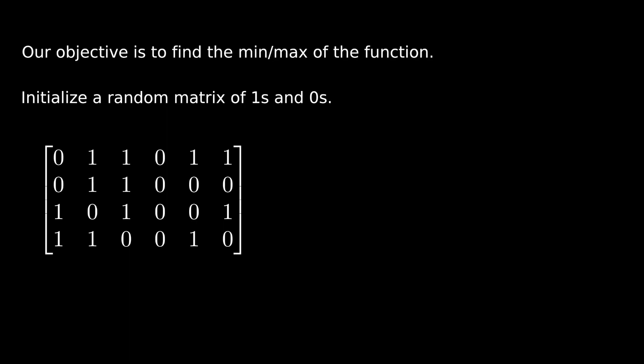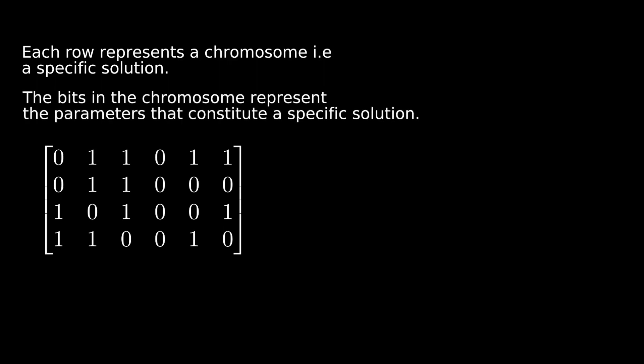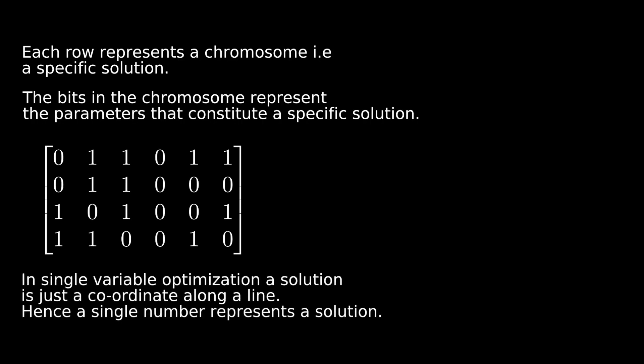As seen before, the first step is to initialize a set of trial solutions. In this example, that corresponds to initializing a set of points on the x-axis. This constitutes the population. This population is stored as a matrix. Each row represents a chromosome, that is, a point on the x-axis in our case. More generally, all the parameters that constitute the solution are combined into a binary chromosome.